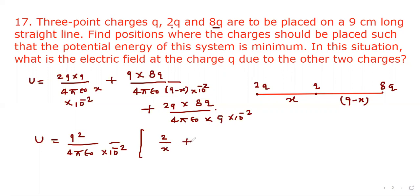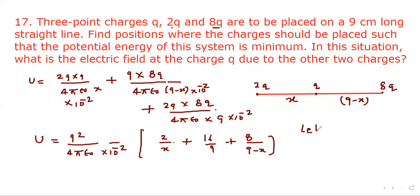Inside the bracket it becomes 2 upon x plus 16 upon 9 plus 8 upon 9 minus x. Since we have to minimize this potential energy, the variable terms — 2 by x and 8 upon 9 minus x — must be minimized. Let's call A equal to 2 upon x plus 8 upon 9 minus x.